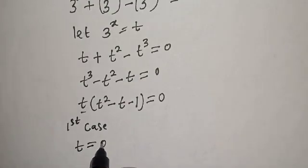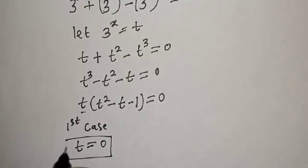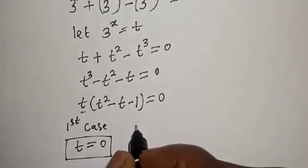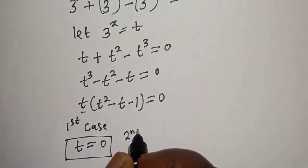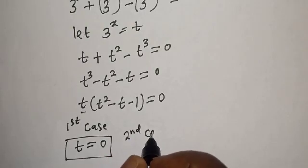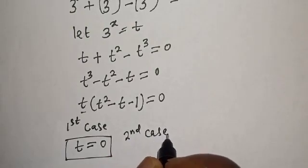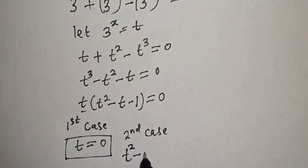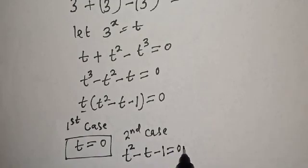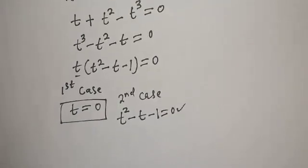There are two cases here. The first case is t equals zero. The second case gives us t squared minus t minus 1 equals zero, which is a quadratic equation.